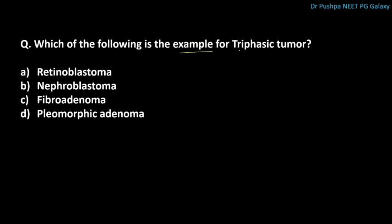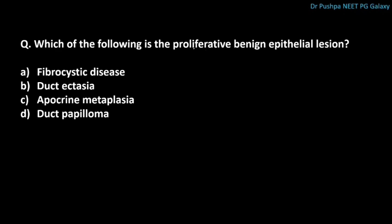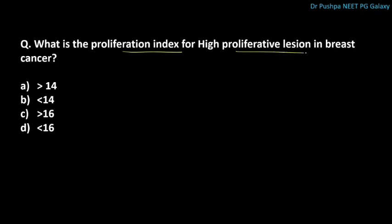Which of the following is an example of a triphasic tumor? The correct answer is nephroblastoma. It is called triphasic because microscopically it contains three types of cells: epithelial cells, mesenchymal cells, and blastomal cells. Fibroadenoma and pleomorphic adenoma are biphasic tumors containing epithelial and mesenchymal cells. Which is the proliferative benign epithelial lesion? The correct answer is duct papilloma. The proliferation index for high proliferative lesion in breast cancer is more than 14.